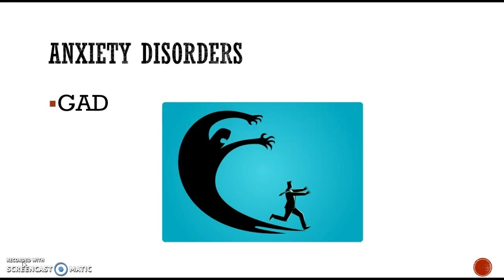The next category is anxiety disorders. Generalized anxiety disorder, or GAD, is a continually tense and apprehensive state where the sympathetic nervous system — that fight-or-flight response — is almost always triggered in a constant autonomic arousal state. It doesn't necessarily have an obvious cause; they just feel this constant anxiety.